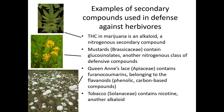There are many other cool secondary compounds whose modes of action we understand. THC in marijuana is an alkaloid — a nitrogenous secondary compound. Mustards, members of the Brassicaceae, contain glucosinolates, another nitrogenous class of defensive compounds, producing a mustard oil bomb that you can feel in wasabi. Queen Anne's lace, related to carrots in the family Apiaceae, contains furanocoumarins, a kind of flavonoid and phenolic carbon-based compound. Tobacco, a member of the Solanaceae, contains nicotine, another very potent alkaloid. Many of these can be considered qualitative plant defense compounds as well as toxins.